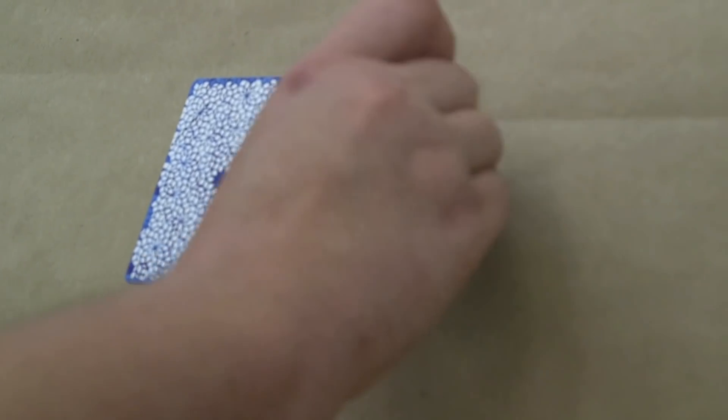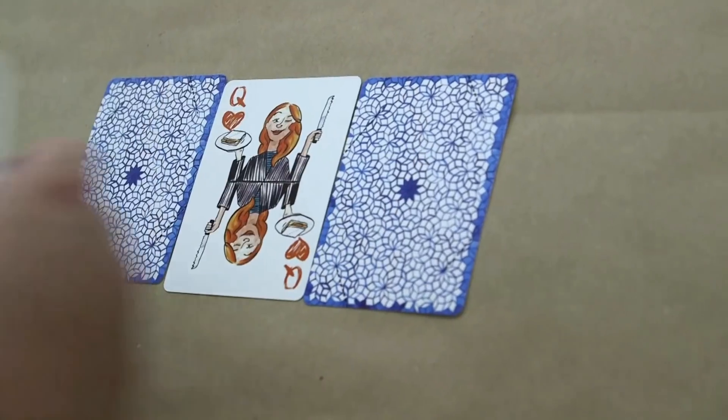Then you pick a number and we're going to do it first with a small number. So give me a number between say five and ten. Let's go for six. Six. So you lay out six cards in a row with the edges touching each other.